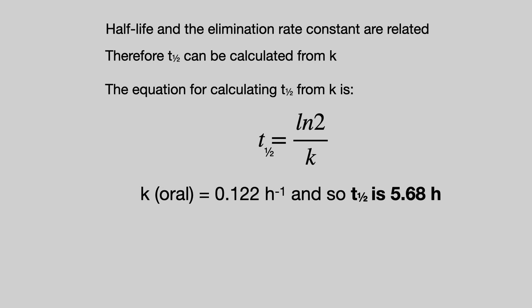So from the graph we had 5.5 hours. From the equation we have 5.7 hours. Since our preferred method of calculating half-life is from the elimination rate constant we will take the half-life of the oral dose of pretend alone as 5.7 hours.